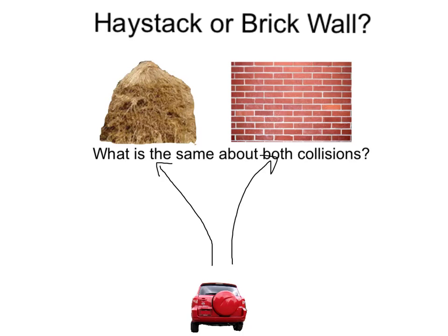The first question is, what is the same about both collisions? That is, if I have an initial speed, and thus an initial momentum, well, both the haystack and brick wall will bring my car to a stop and have a velocity of zero, thus changing my momentum to zero, as shown here.